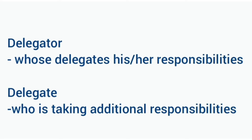In GRC Access Control, when we assign approver delegation, the primary approver — otherwise called the delegator — will receive the access request in his inbox, and the alternate approver, the delegate, will also receive the same request for approval in their inbox. This means the delegate will be able to see their own work inbox requests along with the requests of the delegator as well.